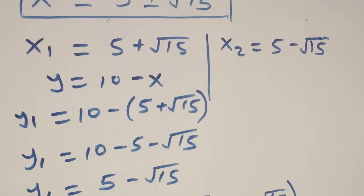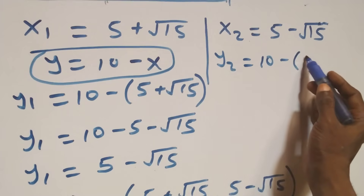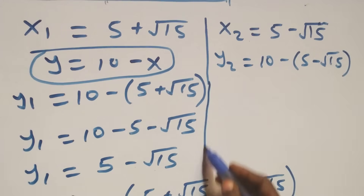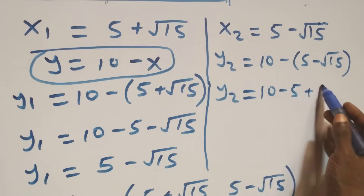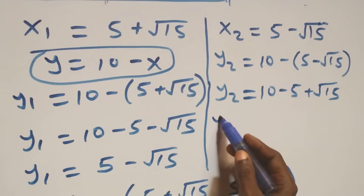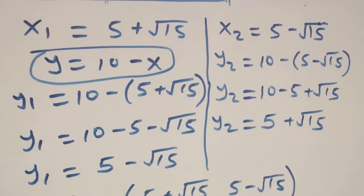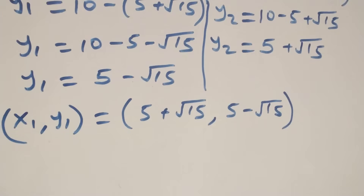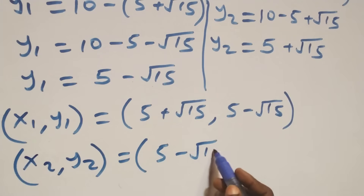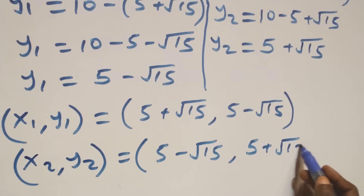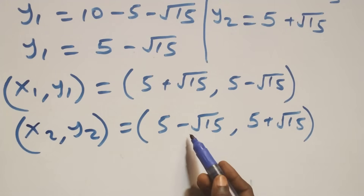Similarly, y₂ equals 10 minus x₂, which is 10 minus (5 minus √15). Expanding gives 10 minus 5 plus √15, so y₂ equals 5 plus √15. The second solution set is (x₂, y₂) equals (5 minus √15, 5 plus √15). Notice the value of x in one set is the same as the value of y in the other, and vice versa.